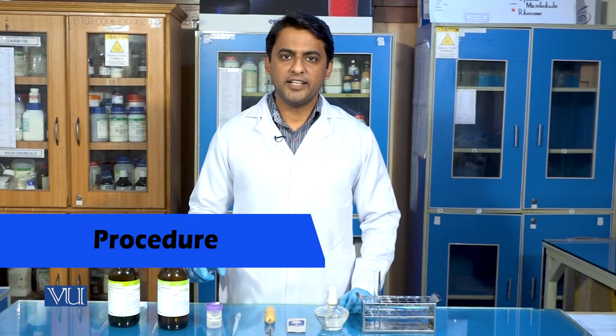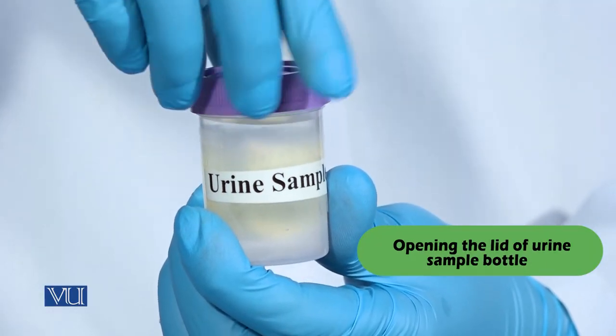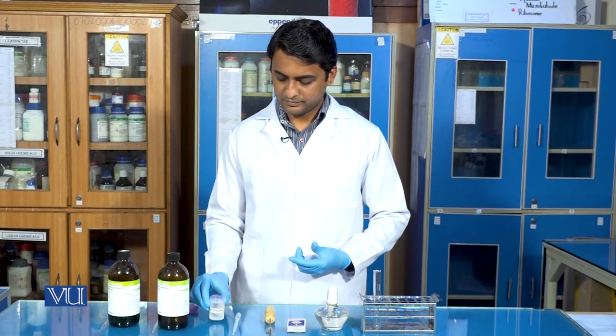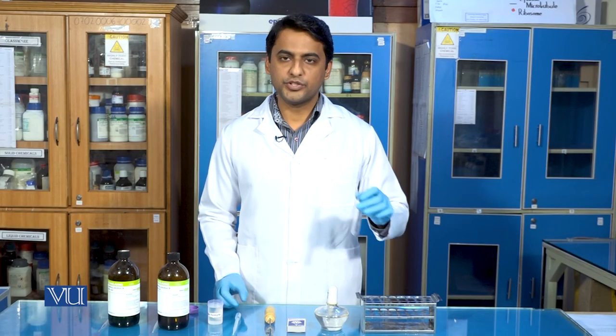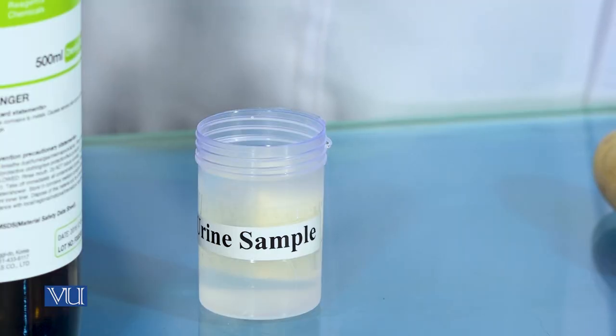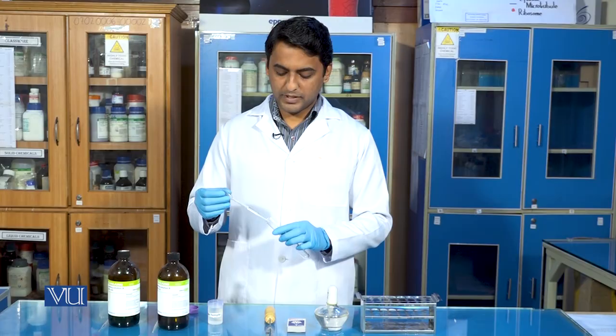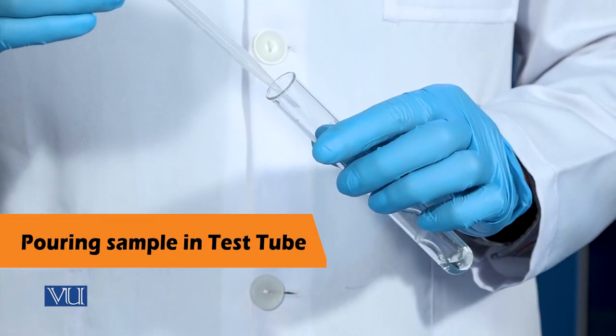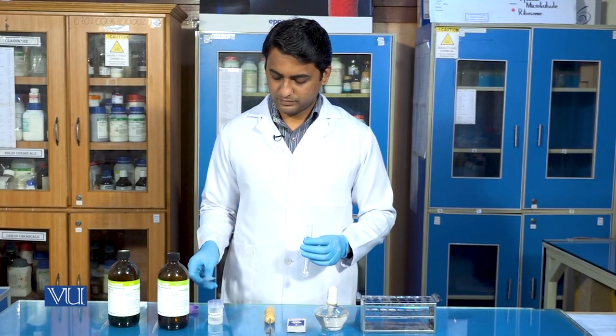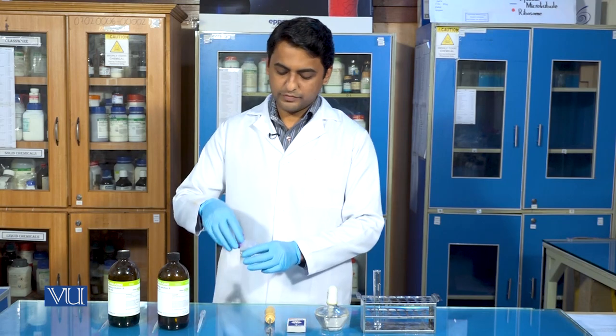In the very first step, we will take the urine sample container, carefully open the lid of urine sample. Then take a test tube. With the help of a dropper, take few drops from urine sample. Now pour urine sample into the test tube. Close the lid of urine sample bottle.